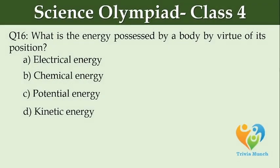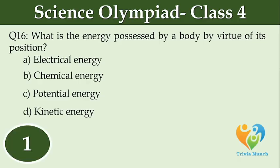Which is the energy possessed by a body by virtue of its position? Option A: Electrical energy. Option B: Chemical energy. Option C: Potential energy. Option D: Kinetic energy.